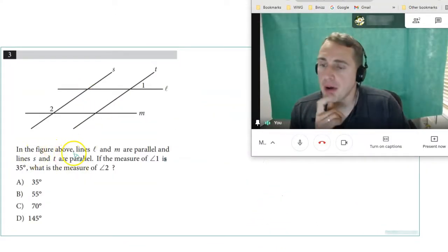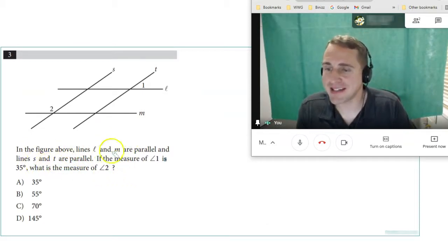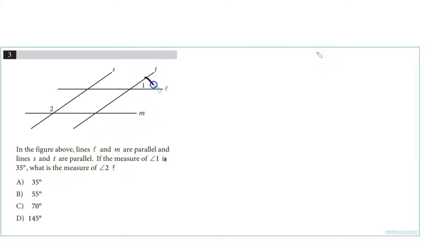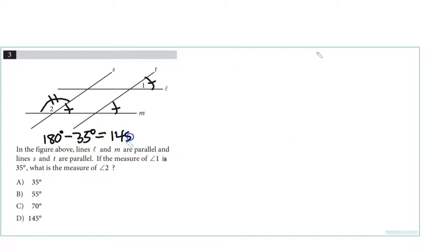Number 20: In the figure above, lines L and M are parallel, and s and t are parallel. If the measure of angle 1 is 35°, what's the measure of angle 2? This angle has to be the same as this angle. So this needs to be supplementary. That's 180° minus 35°. 180° minus 30° is 150, so this would be 145.